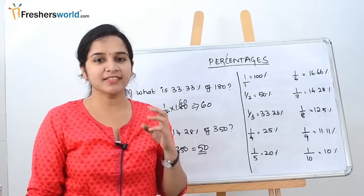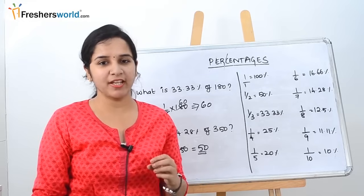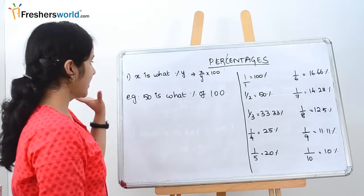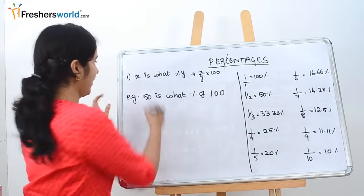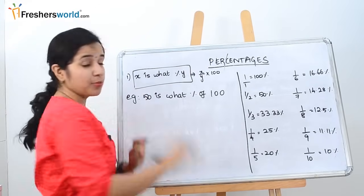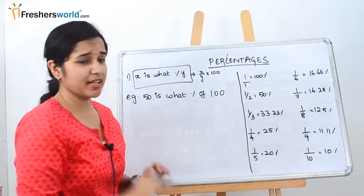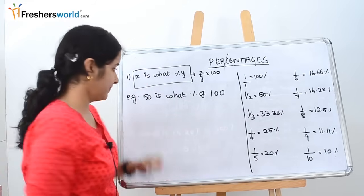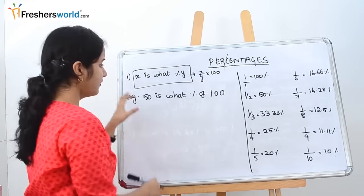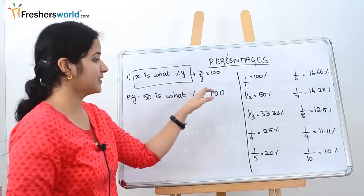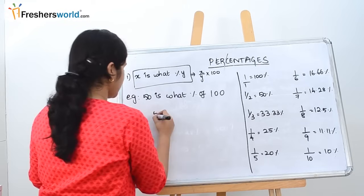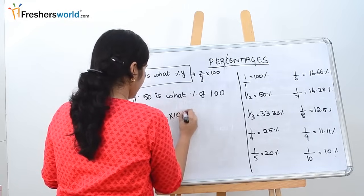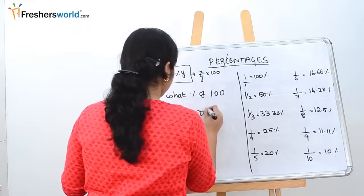Let's understand the three basic problem types in percentages. The first type is: x is what percent of y? This means x/y × 100. For example: 50 is what percentage of 100? That is 50/100 × 100 = 50%.